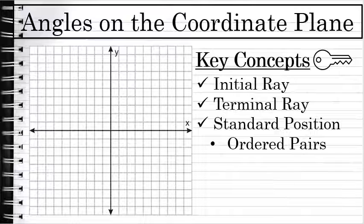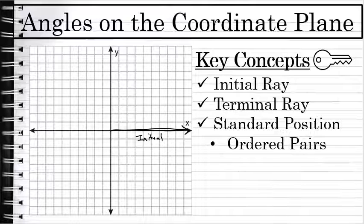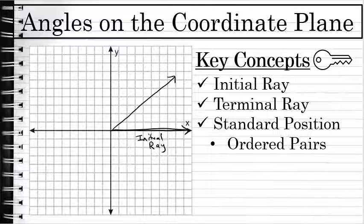An angle on the coordinate plane is said to be in standard position if the initial ray is the x-axis. When you see angles on the coordinate plane, they'll almost always be in standard position, which means their initial ray is the x-axis, and the terminal ray could be anywhere around the entire coordinate plane. You'll usually see the arrowhead that represents the direction of the angle starting on the x-axis — here it's going up to form about a 30-degree angle.